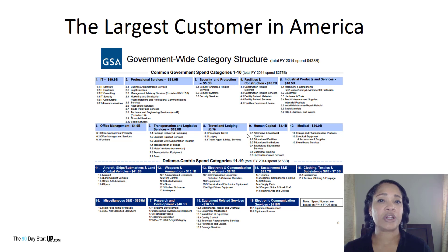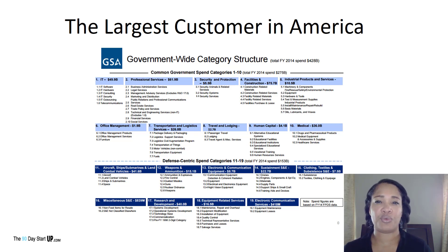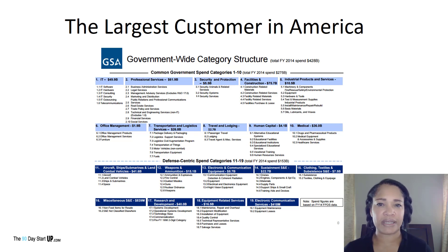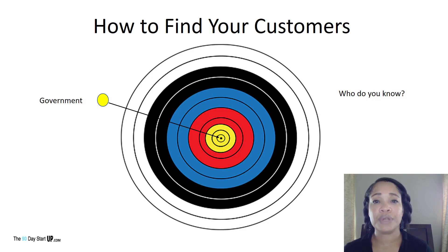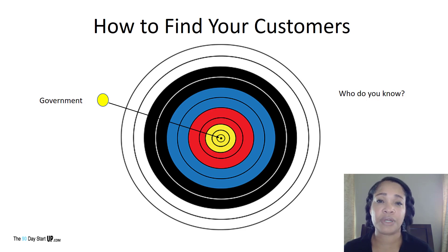When you think about the big picture, the government has facilities and locations throughout the entire United States. As we look at the next category — state and local government — we first have to ask ourselves: if we decide to go into the government arena, where we're talking about contracts, the key thing to keep in mind is who do you know? Chances are you know someone who knows someone who works for the government.